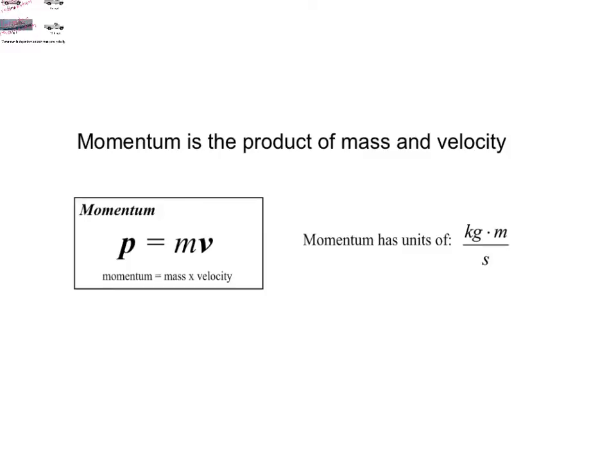So, the faster an object moves, the more momentum it has. Similarly, the more mass an object has, the greater its momentum can be. That's why a slow-moving aircraft carrier has more momentum than a speeding truck.